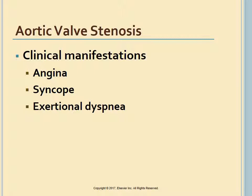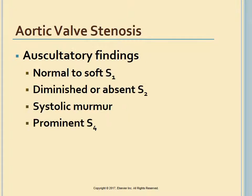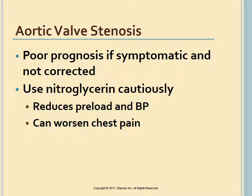Manifestations of aortic valve stenosis develop when the valve orifice becomes about one-third its normal size. These include the classic triad of angina, syncope, and exertional difficulty breathing, reflecting left ventricular failure. Auscultation reveals a normal or soft S1, a diminished or absent S2, a systolic murmur, and a prominent S4. The prognosis is poor for patients who exhibit manifestations and whose obstruction is not fixed. Nitroglycerin is used cautiously to treat angina, as it can significantly reduce BP.